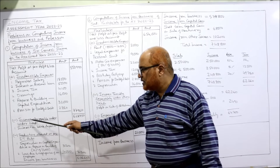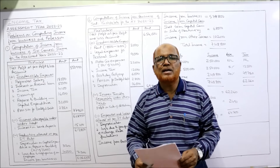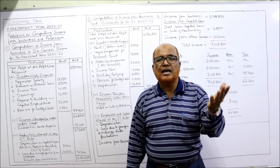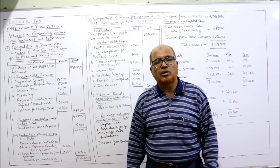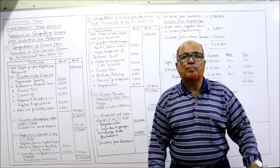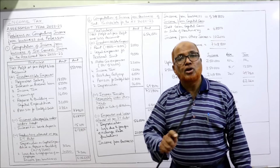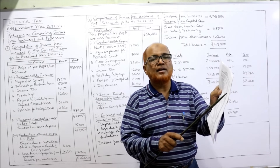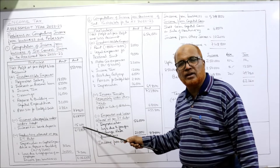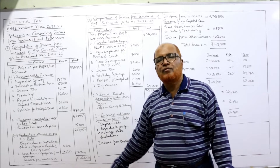From this we deduct incomes chargeable under other heads. Some incomes credited to the P&L account are not business income — they are taxable under other heads like income from house property, capital gains, or other sources — not under income from business. Gross profit is a business income. Interest on bank deposit is taxable under income from other sources, not under income from business. So we deduct interest on bank deposit — 15,100. Result: 6,28,950 minus 15,100 = 6,13,850.